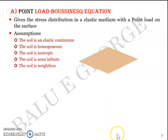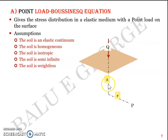We will start with the discussion on the equation proposed by Boussinesq. You fundamentally have the ground level, and you apply a point load Q over it. You need to find the stress intensity at a point P which is at depth Z below Q and radial distance R away from the axis. R and Z represent the point P with respect to the point of application of load Q.